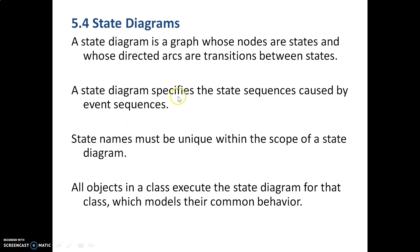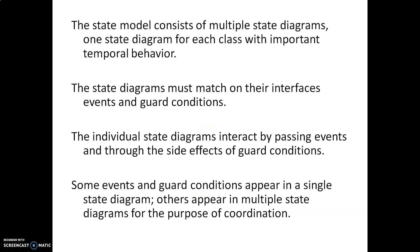A state diagram is a graph whose nodes are states and whose directed arcs are transitions between states. We represent a state as a rounded box and transitions as arrows. When you put it all together in a diagram showing all the states, that is a state diagram. It specifies the state sequences caused by event sequences. State names must be unique within the scope of a state diagram, and all objects in a class execute the state diagram for that class, modeling their common behavior.